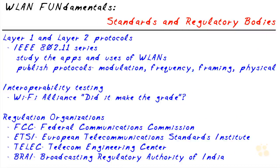So in this video, we've identified that the IEEE and its working groups are responsible for layer one and layer two protocols for wireless local area networks. They look at an area where there's a need, identify potential uses for a technology, study those applications, and then publish protocol standards regarding modulation, frequency, framing, and physical layer requirements. Effectively everything at layer one and two is set as standards by the IEEE, and then vendors follow those standards to implement the technology.